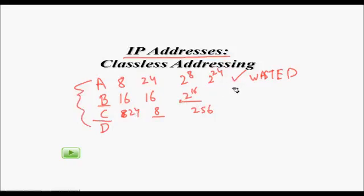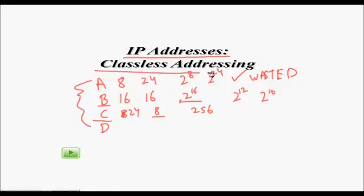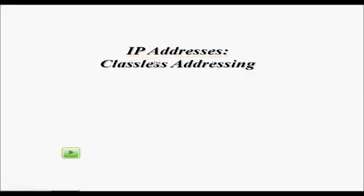If you want 2 to the power of 12 hosts or 2 to the power of 10 hosts, classful addressing doesn't allow it. There's no flexibility. The solution to this problem is classless addressing.